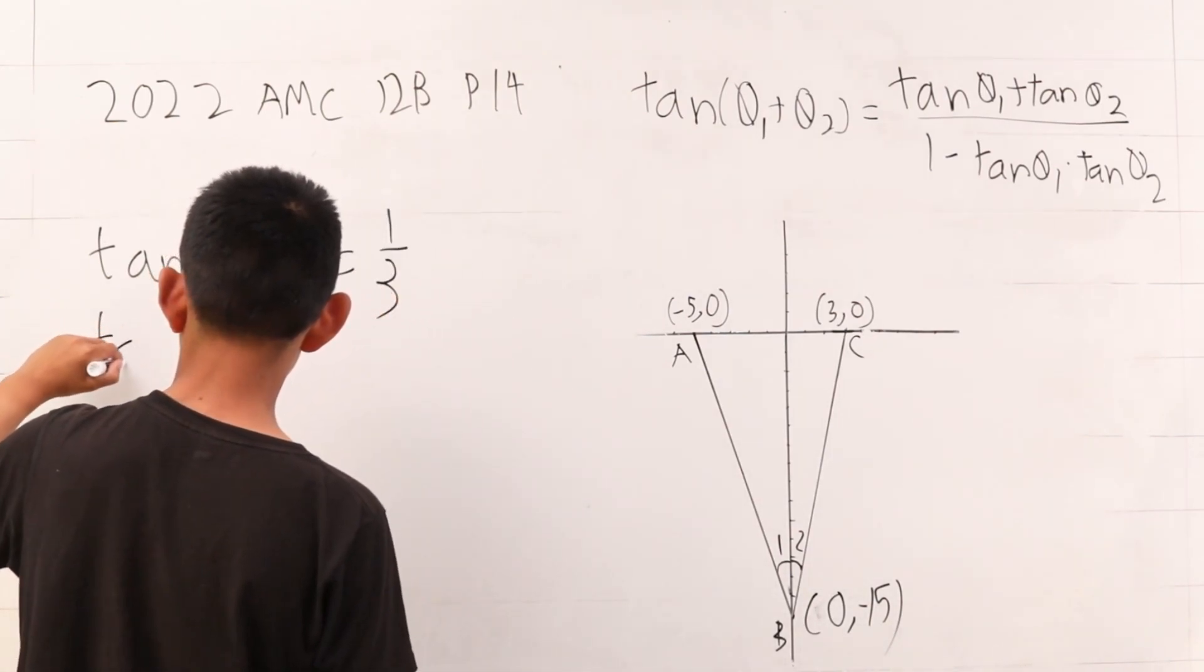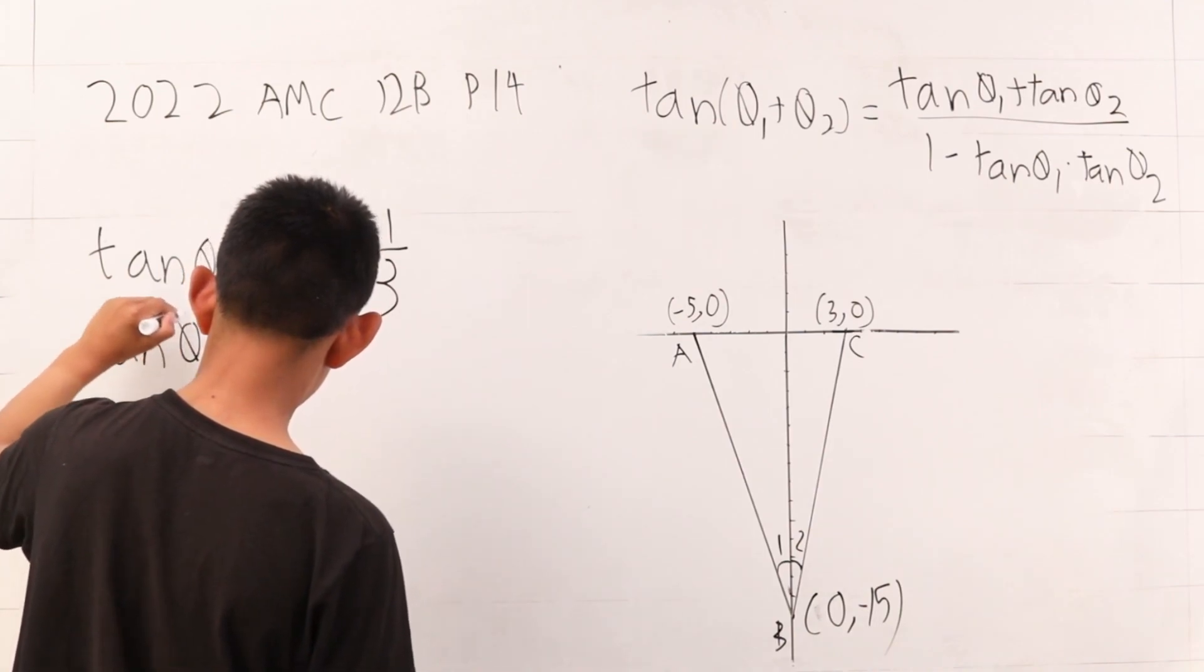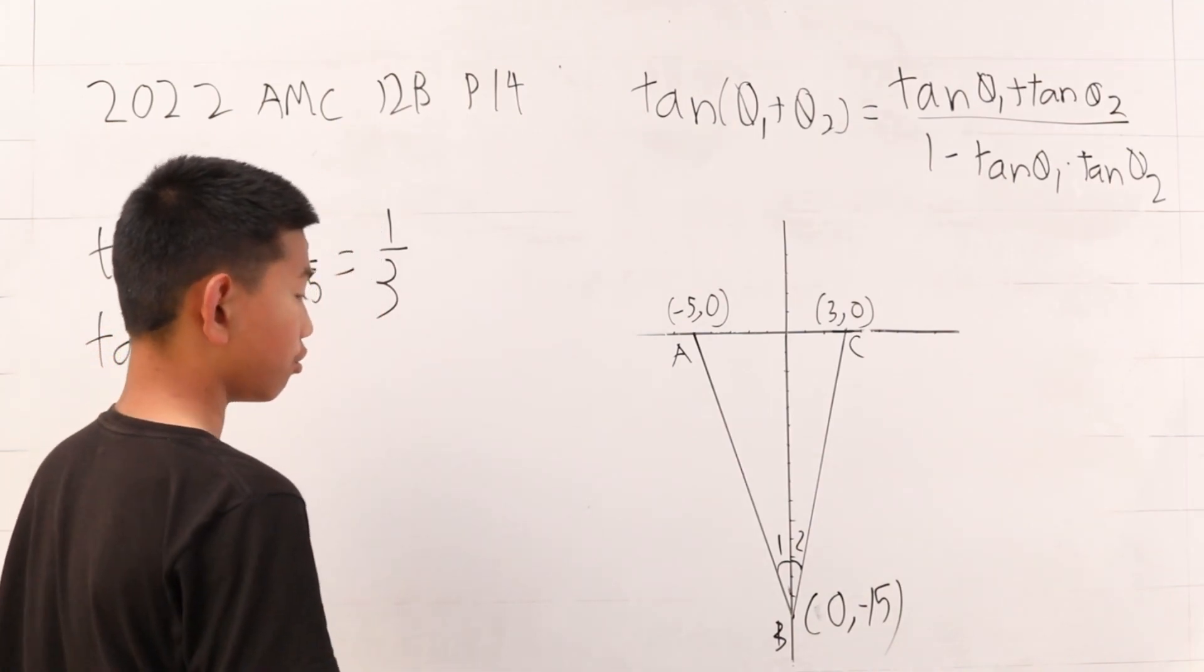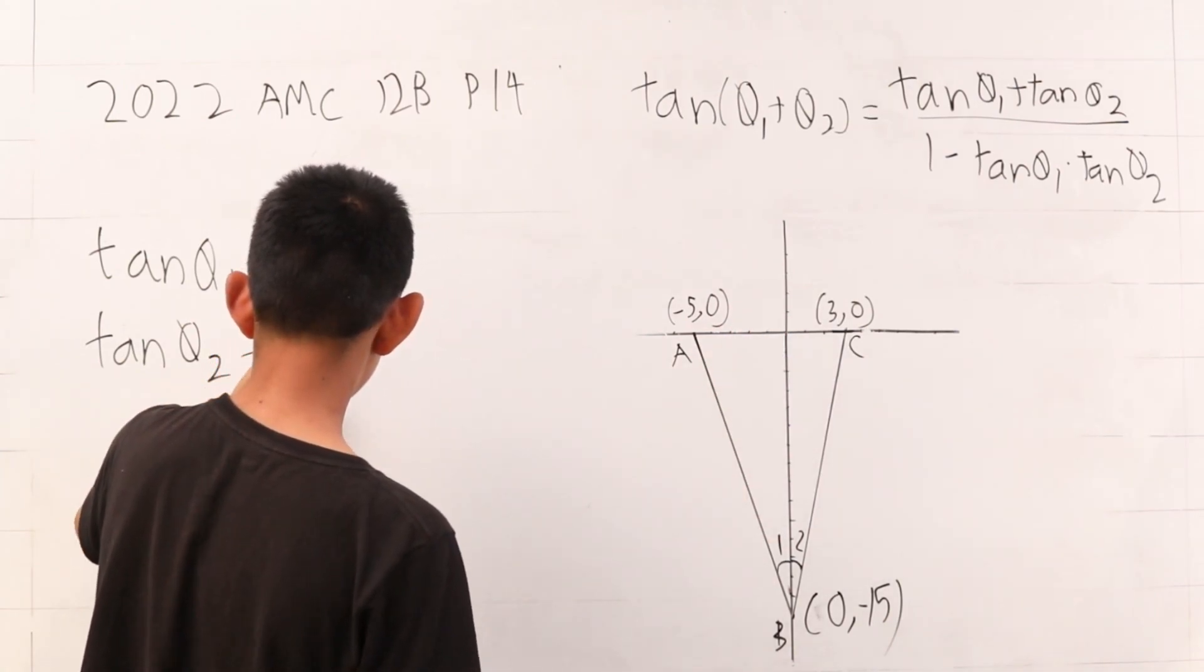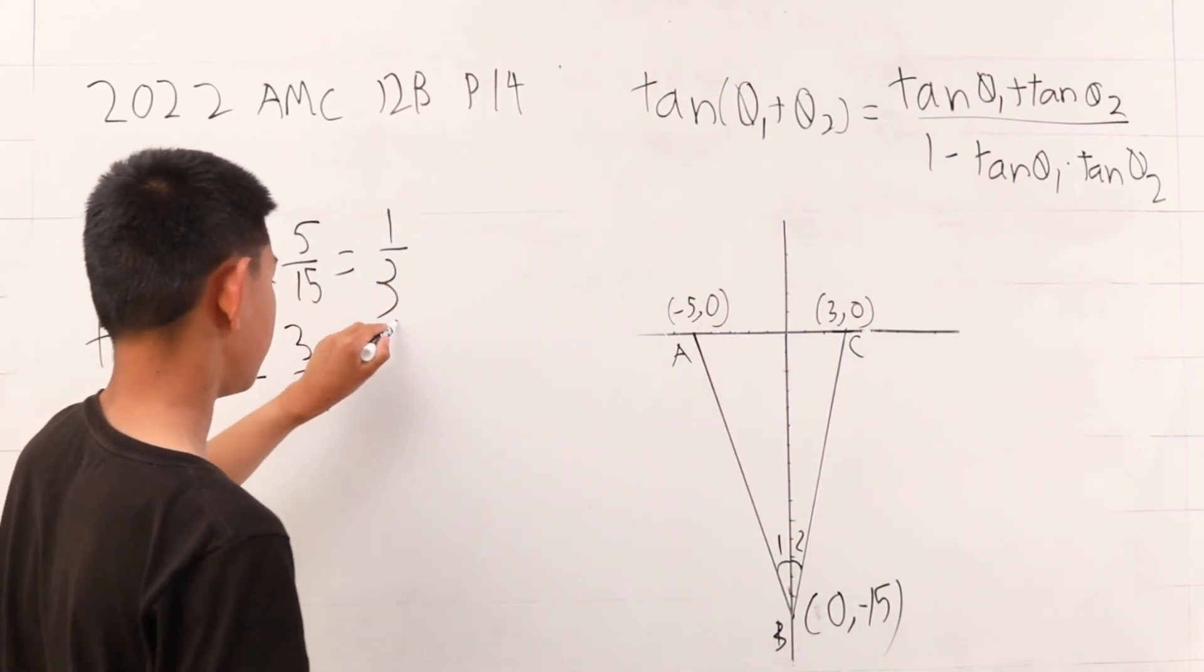We do the same thing. Tangent of angle 2 is equal to 3 over 15, which is equal to 1 fifth.